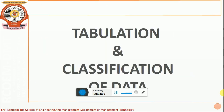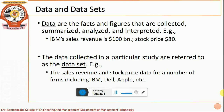Let us start with the primary requirement for categorizing of data and systematic classified and tabulated data. Before we start, we need to understand some basic terminologies used in the tabulation and classification of data. The first is data. Data are the facts and figures that are collected, summarized, analyzed and interpreted. For example, the stock price of IBM is $80, and the sales revenue of IBM is $100 billion. These are individual datum which are called as data.